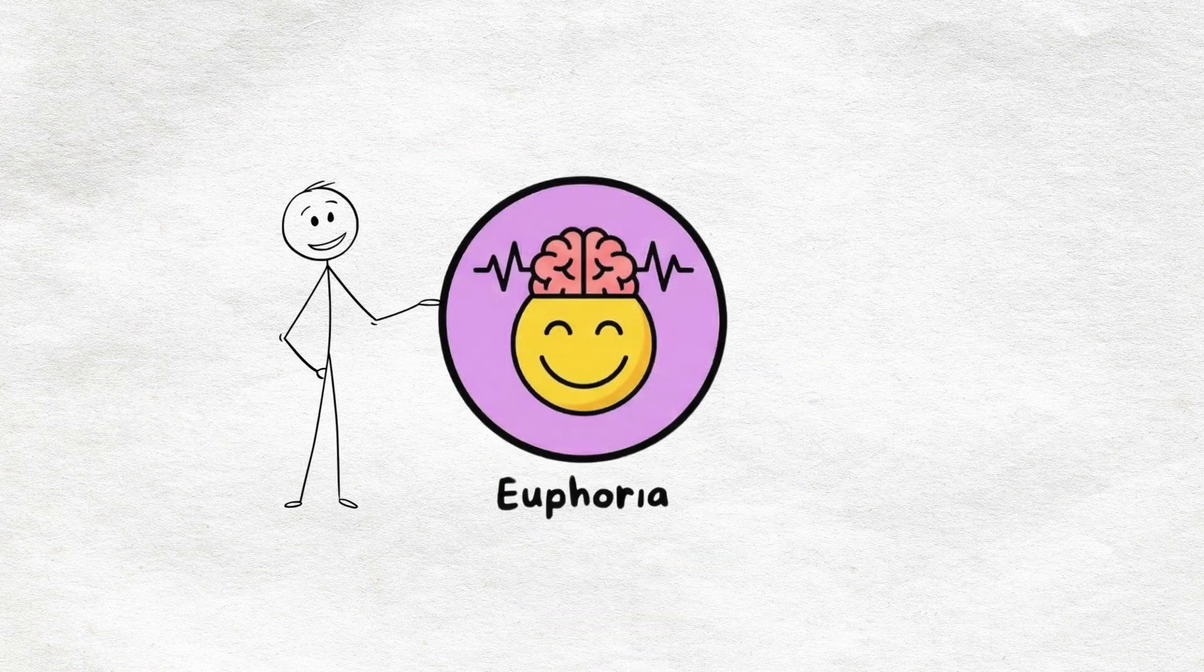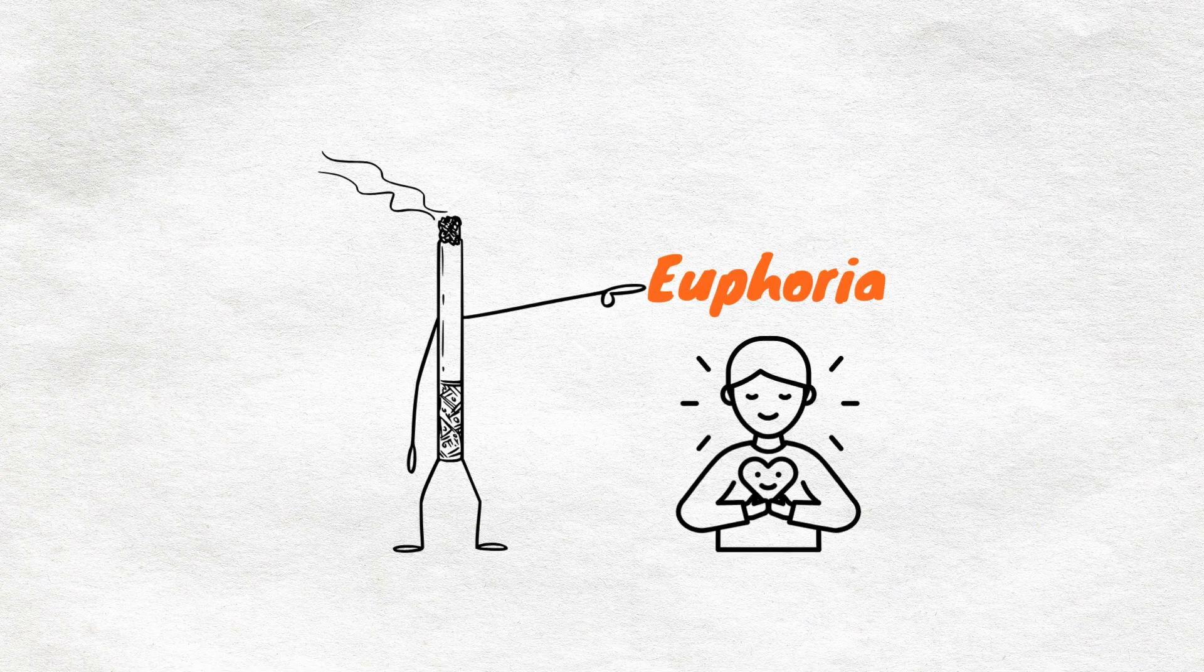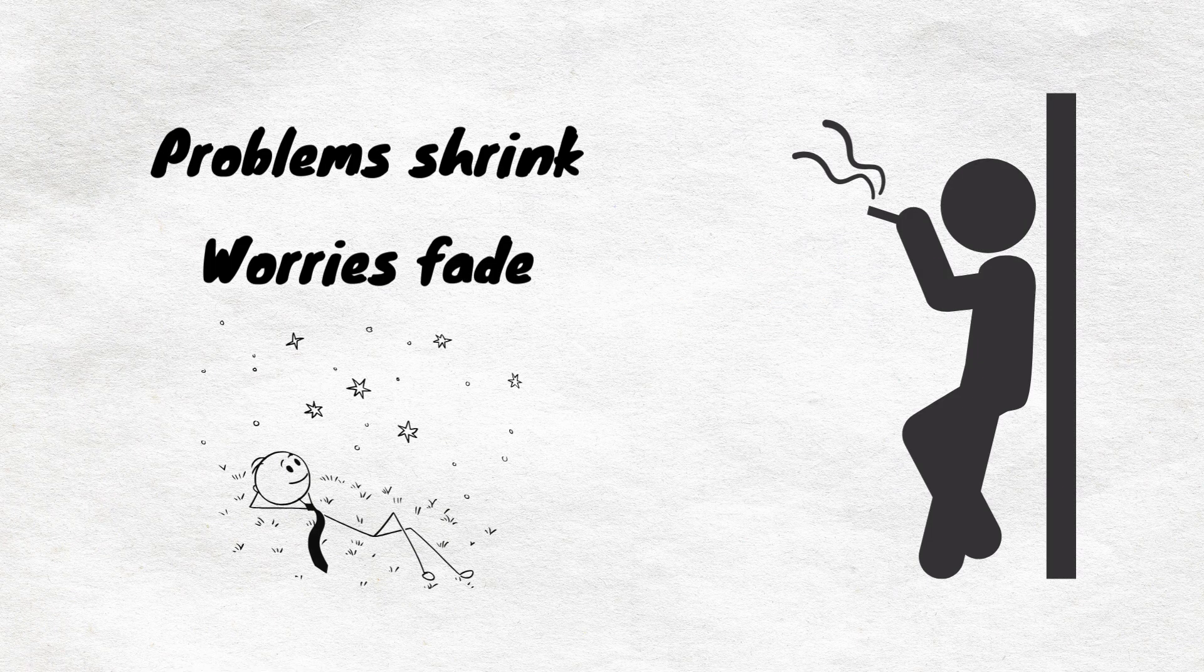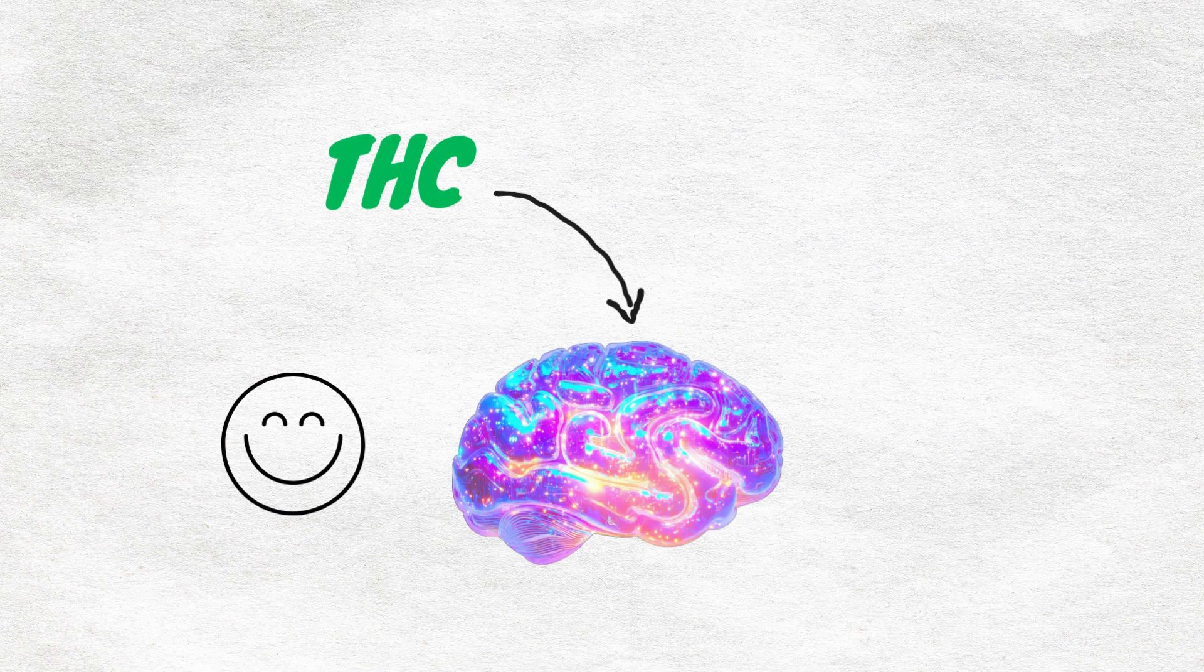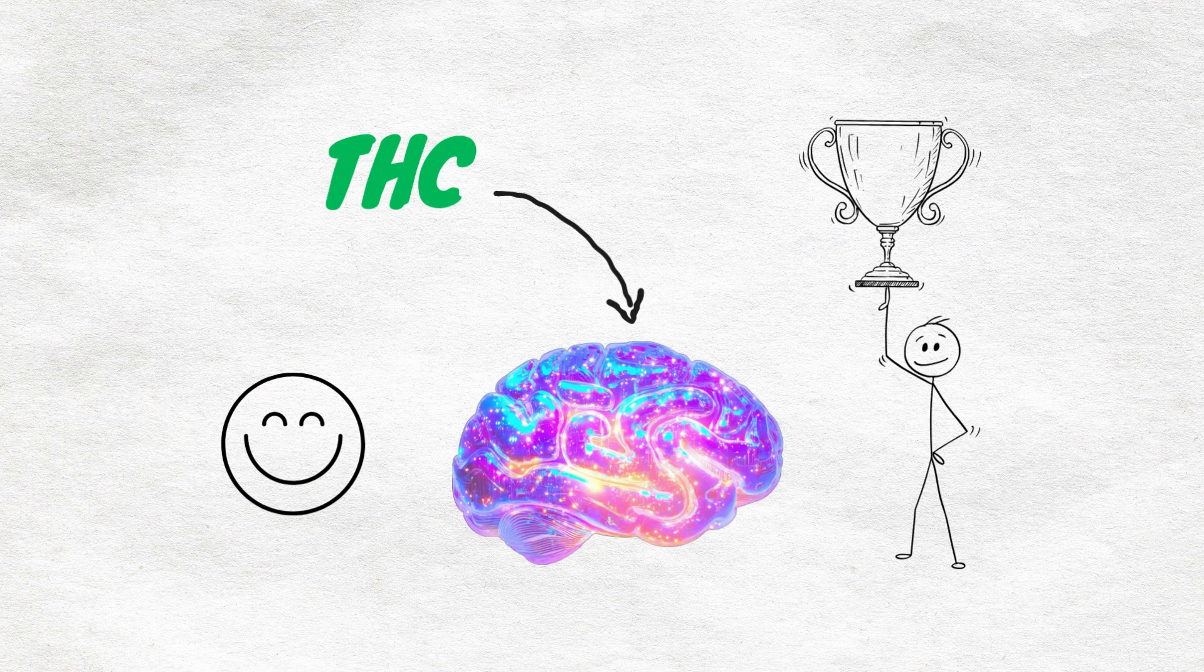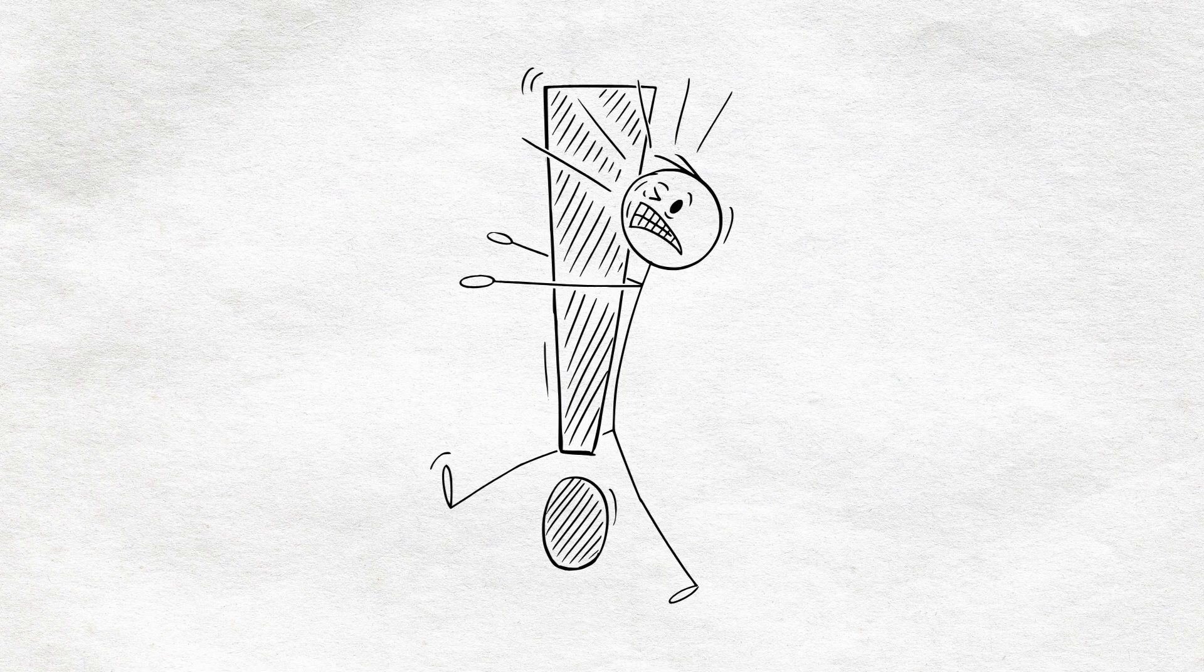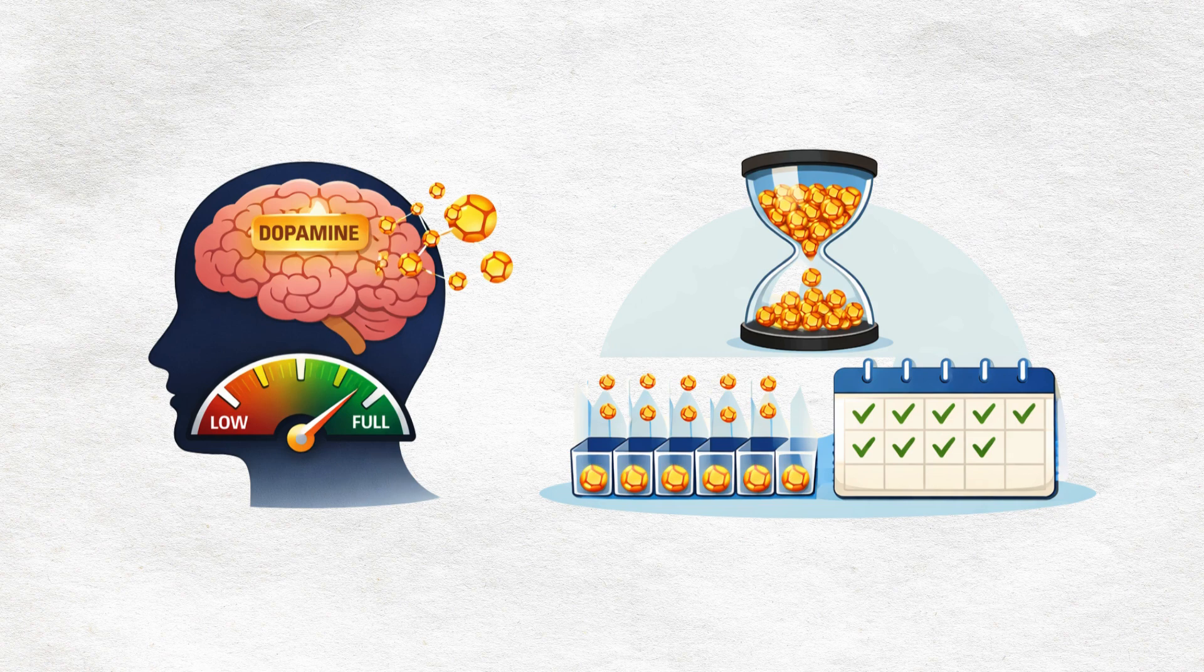Euphoria, the chemical smile. The first wave that hits is euphoria. A warm, glowing feeling spreads through your chest. Problems shrink, worries fade. The world suddenly has softer edges. This isn't an accident. THC floods your brain with dopamine, the molecule of pleasure and reward. Your neurons light up like a city at night, and for a moment, everything just feels good.